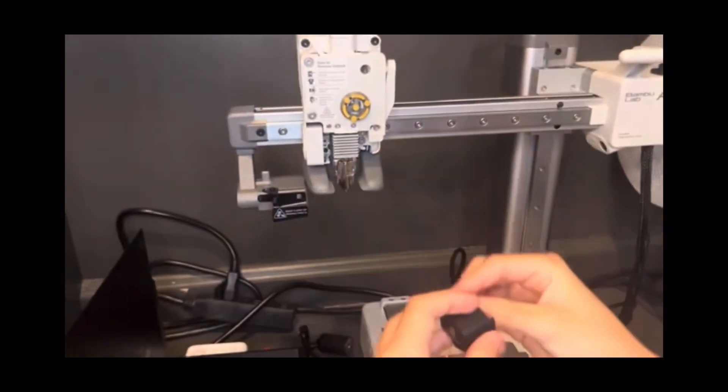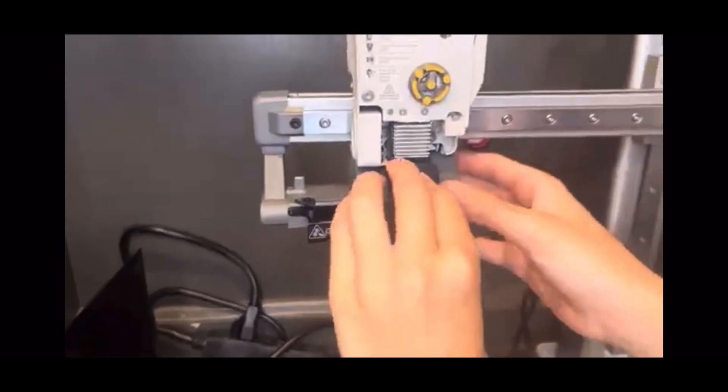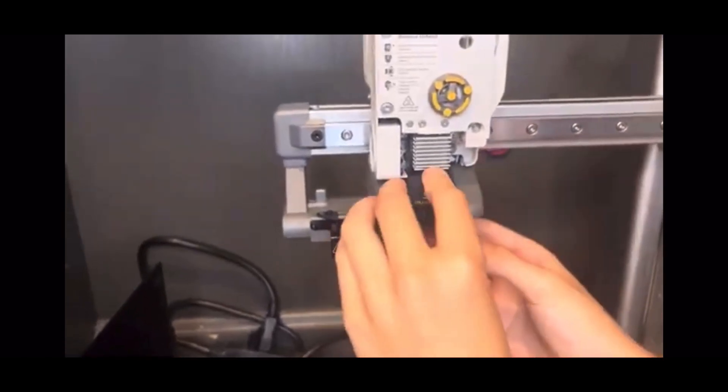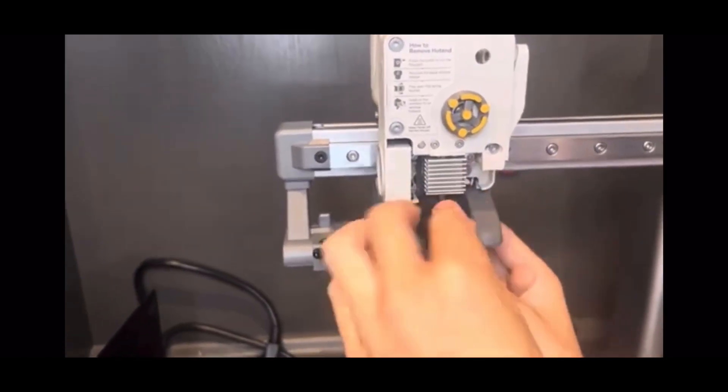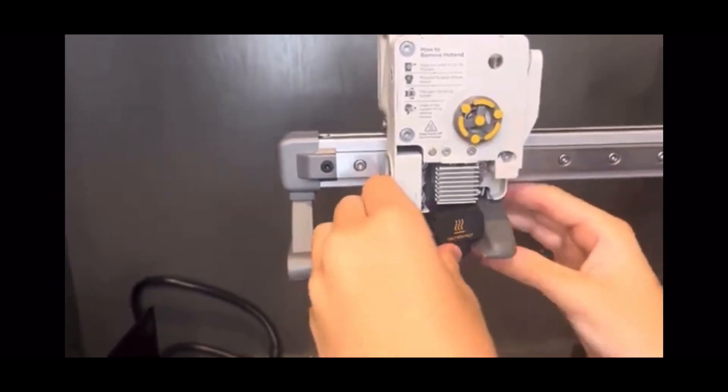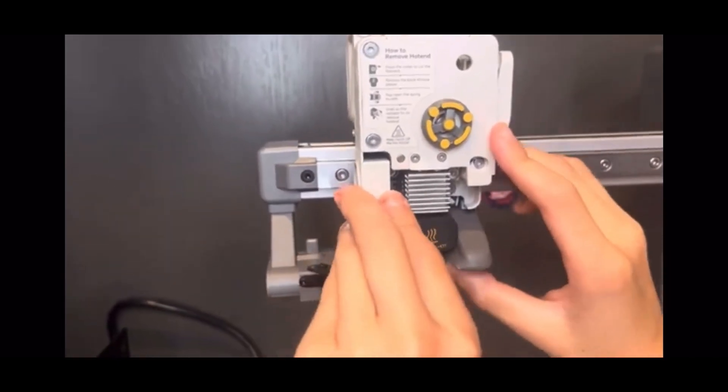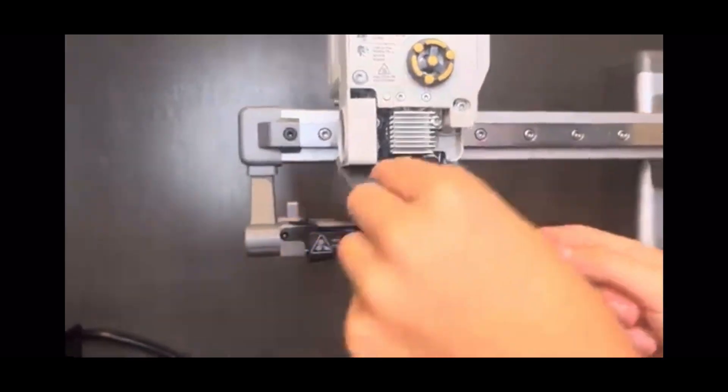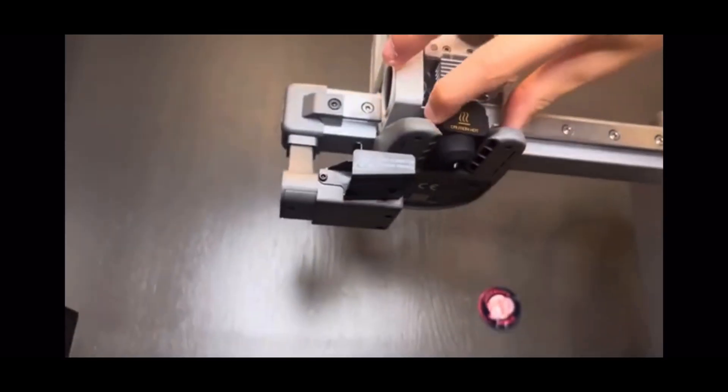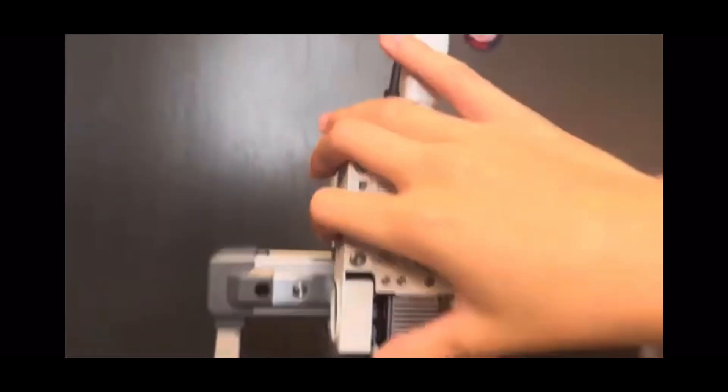Open this and you're just going to push it on. You want to push down so the nozzle can get through. Then there's the nozzle right there peeking through. You're going to make sure that it's even and straight.